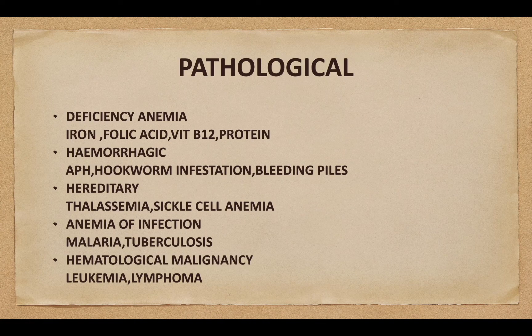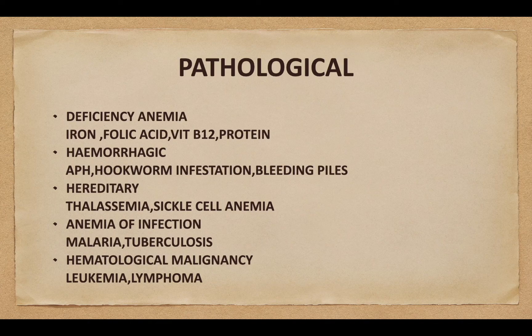Pathological anemia — deficiency anemia like iron, folic acid, vitamin B12, and protein. Hemorrhagic anemia includes antepartum hemorrhage, hookworm infestation, and bleeding piles. Hereditary anemia includes thalassemia and sickle cell anemia. Anemia of infection like malaria and tuberculosis. Hematological malignancy includes leukemia and lymphoma.